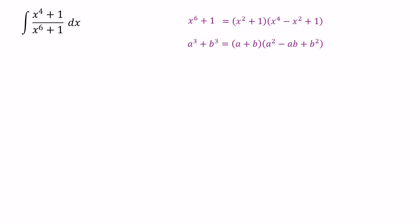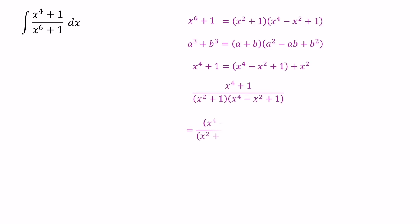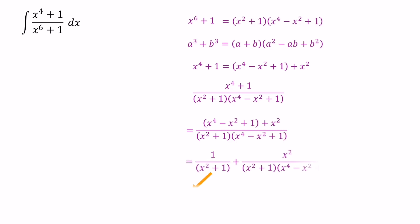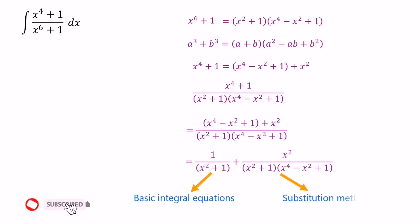Additionally, we can express the numerator value x to the power of 4 plus 1 in terms of the denominator terms. After that, we can divide the numerator values by the denominator value. To simplify these two fractions, we can use basic integral equations and the substitution method. Let's jump into the question.